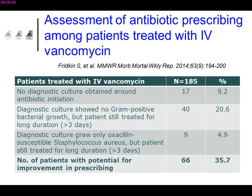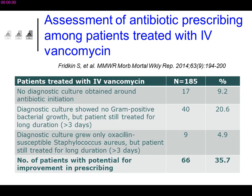In 5% of cases, cultures showed methicillin-susceptible Staph aureus but doctors still continued vancomycin. Adding up the situation, 66 out of 185 patients received unjustified treatment — almost 36% of cases. You can do this type of study in your hospitals and I think you'll get more or less the same results.